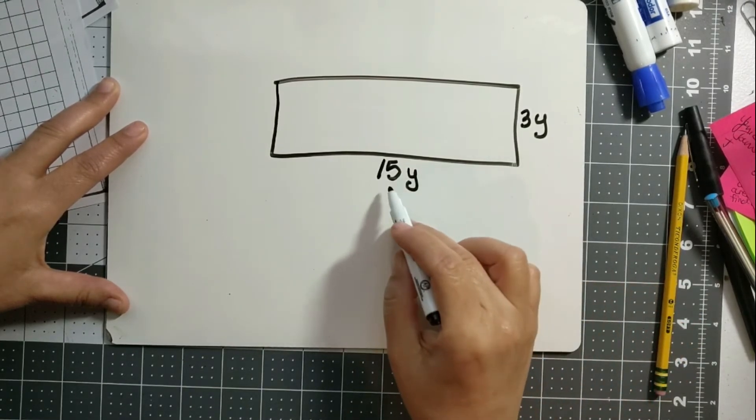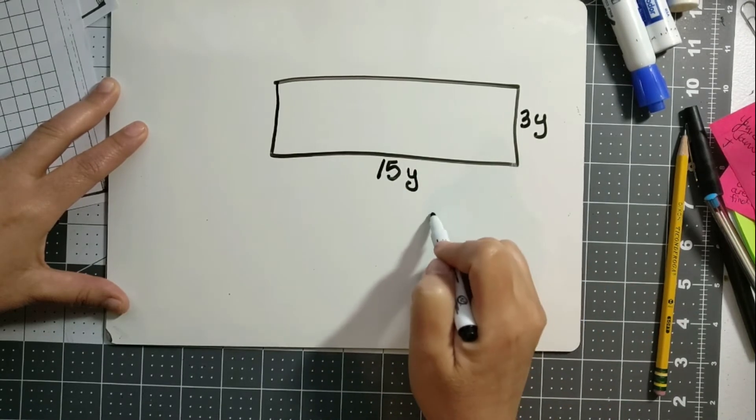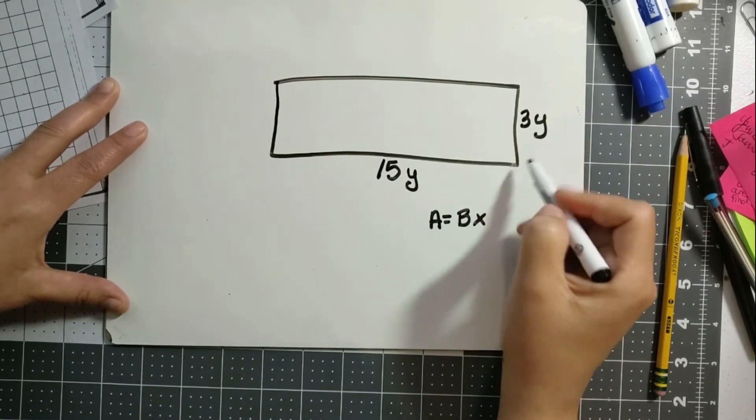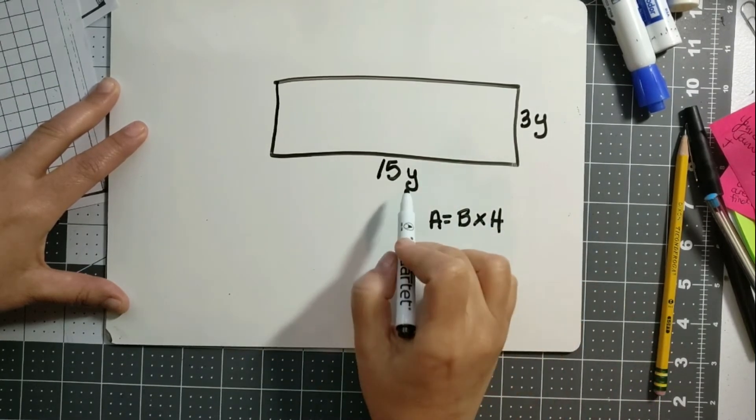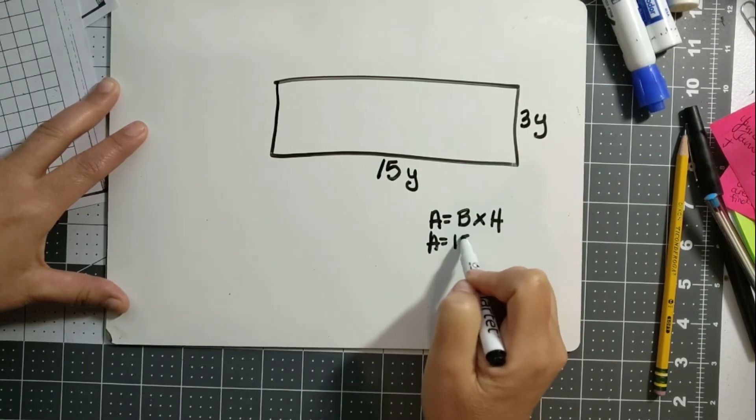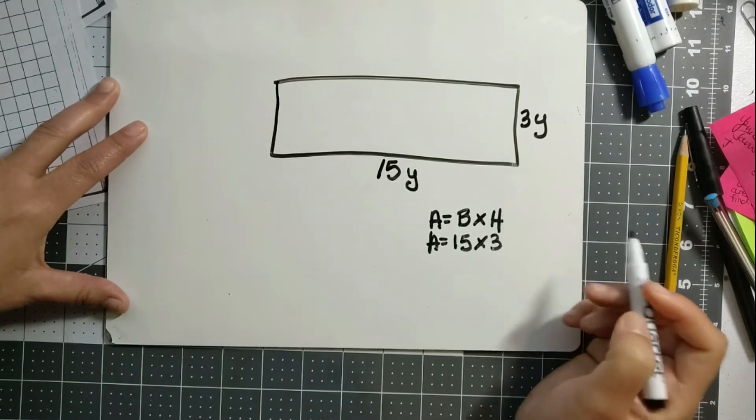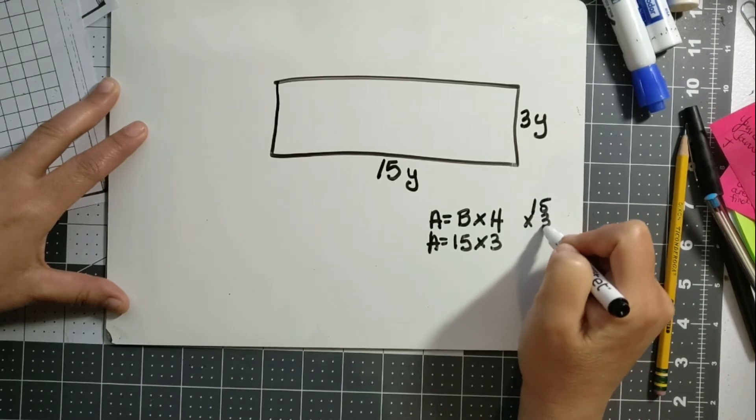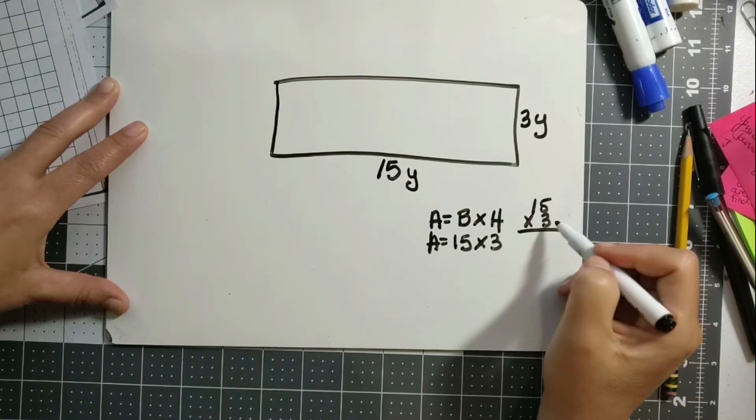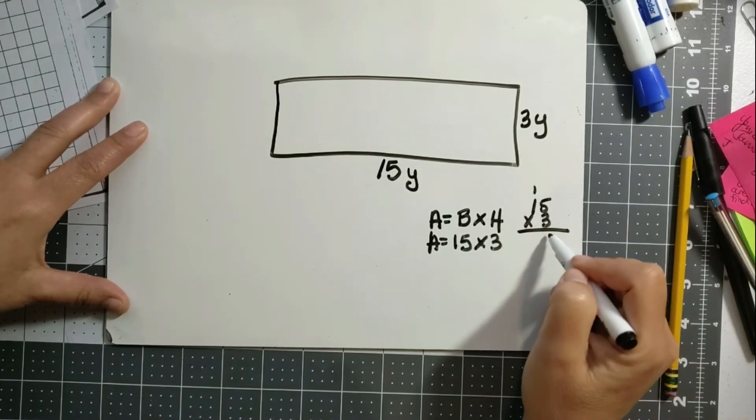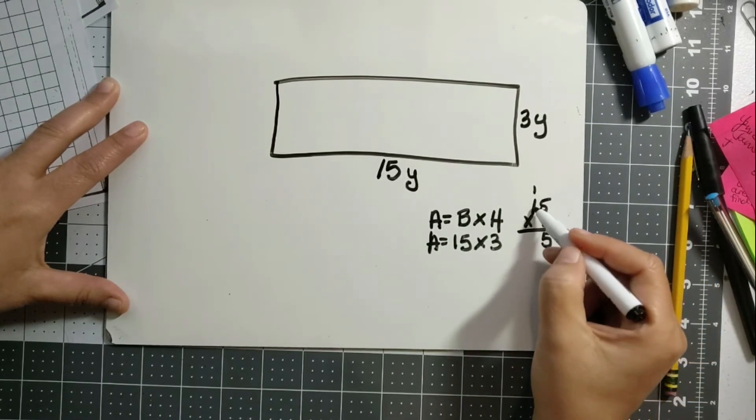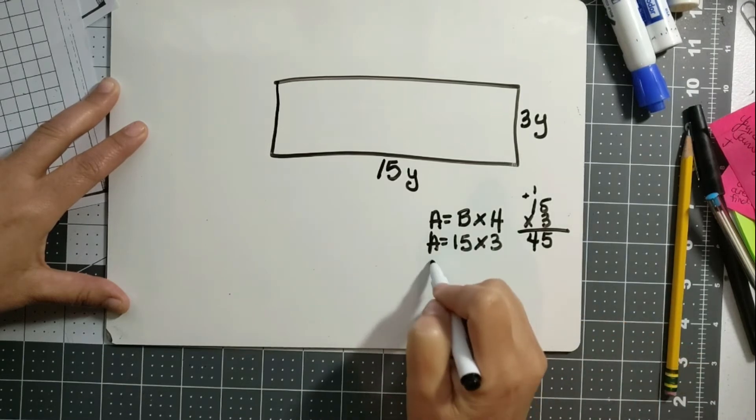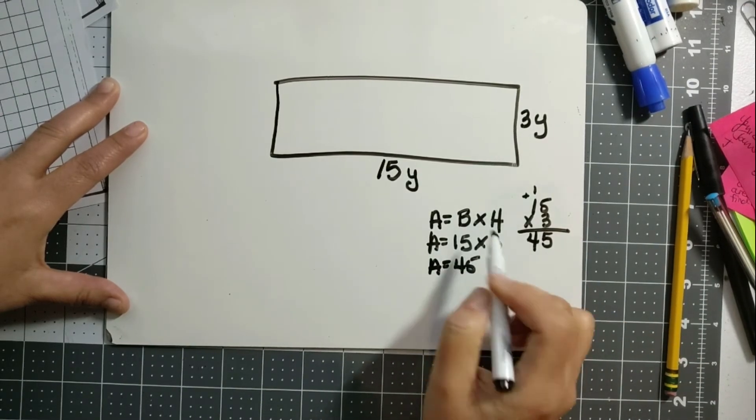Okay, thank you for coming back. So in finding the area, we know that the formula is base times height. So it's going to be the base, which is 15, times the height, which is 3. So then you're going to multiply 15 times 3. Well, we know 3 times 5 is 15, 3 times 1 is 3, plus the one on top is 4. So your answer is 45. The area is 45 yards squared.